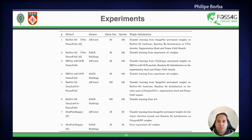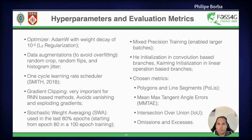We carried out 8 experiments using both the AI Crowd and Brazilian Army Geographic Service datasets. In our experiments, we used the following hyperparameters: as our optimizer, we used AdamW with a weight decay of 0.001, which is L2 regularization. We also used data augmentations to avoid overfitting, such as random crop, random flips, and histogram equalization. We used a one-cycle learning rate scheduler and gradient clipping to avoid vanishing and exploding gradients, especially in the RNN-based methods. We also used stochastic weight averaging in the last 80% of epochs to achieve better convergence.